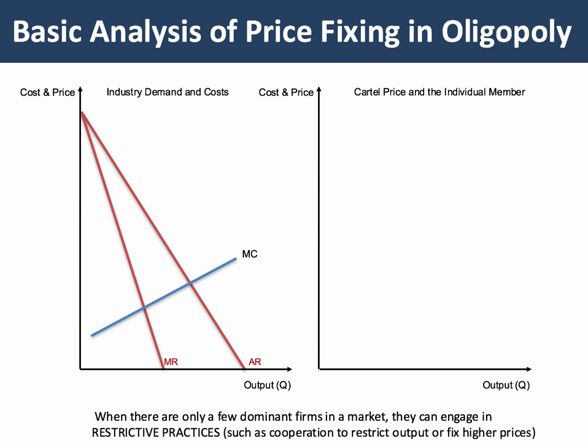How does the analysis diagram work? On the left hand side we have the industry demand and costs, and the cartel, if it's a sufficiently big part of the industry, will try to set quite a high price — a profit maximizing price, P1. The main aim of the cartel is to achieve a level of joint profits similar to that which might be achieved by a pure monopoly. So the profit maximizing price, P1, becomes the cartel price — the fix, if you like.